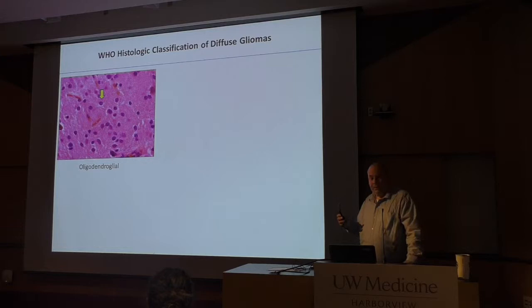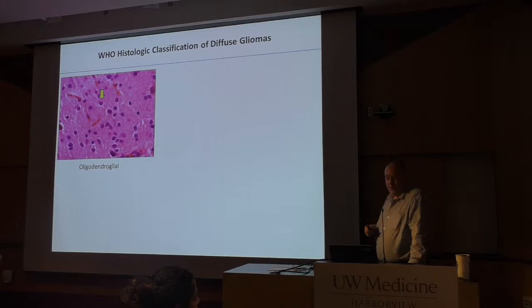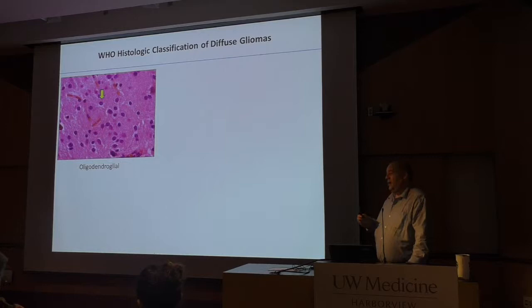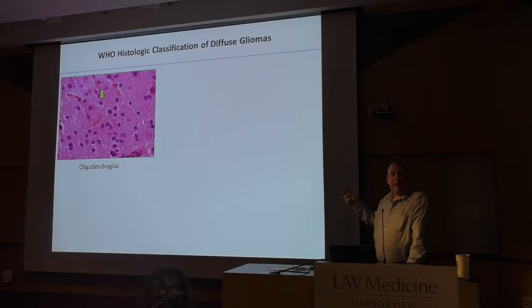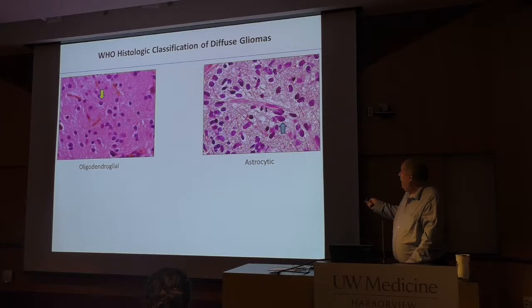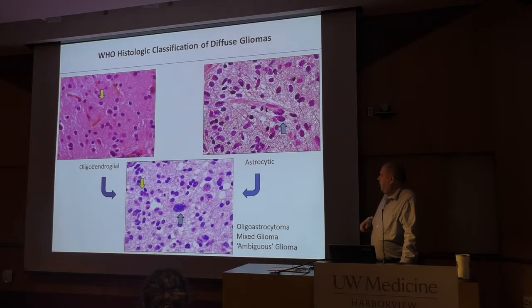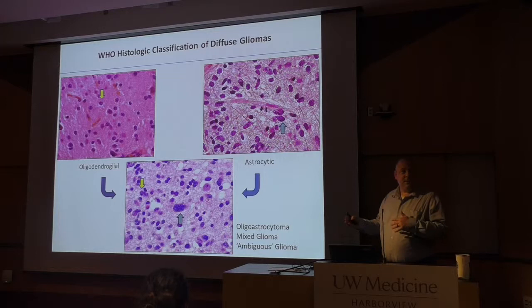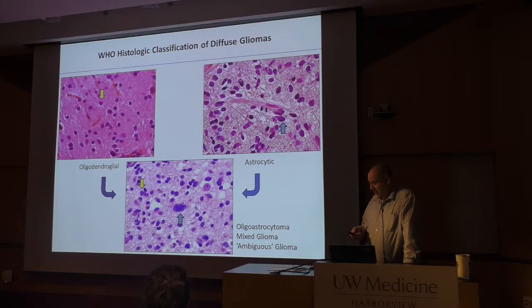Focusing on diffuse gliomas — the main category of adult brain tumors with the highest morbidity — the histological framework: oligodendrogliomas closely look like oligodendrocytes, with round regular nuclei. This example shows nuclear morphology without the classic fried egg appearance or chicken wire vasculature. Astrocytic tumors are more elongated with irregular chromatin, and up until recently we had this wastebasket terminology of mixed glioma, ambiguous glioma, or oligo-astrocytoma.